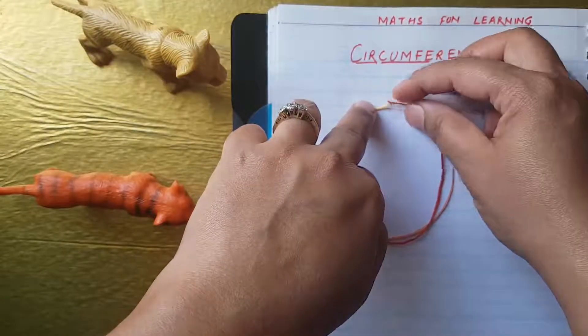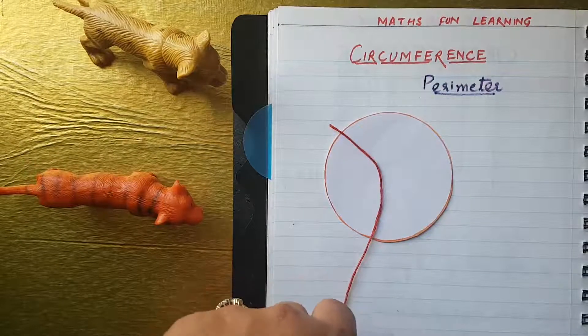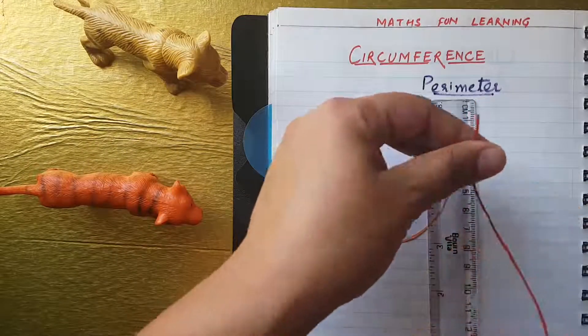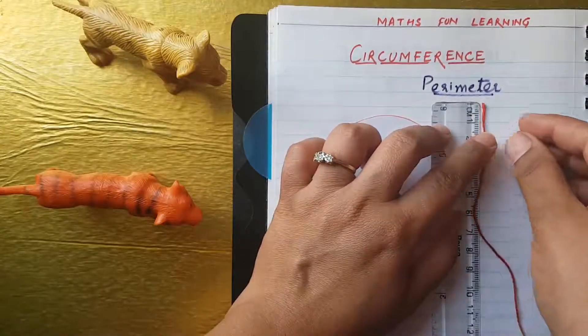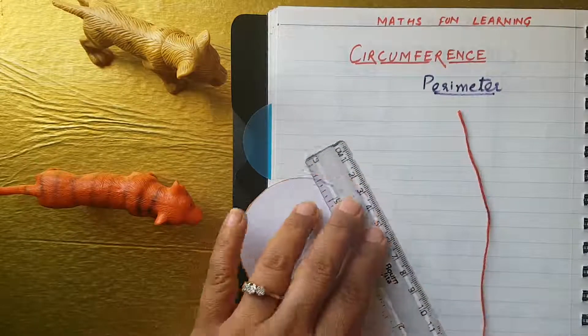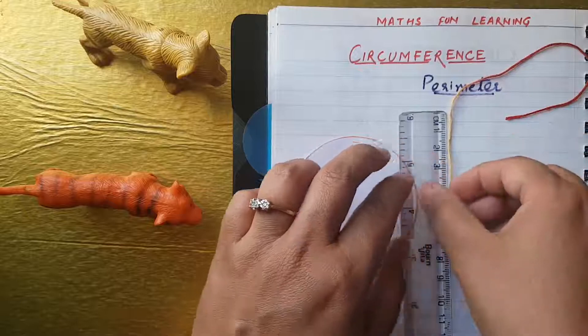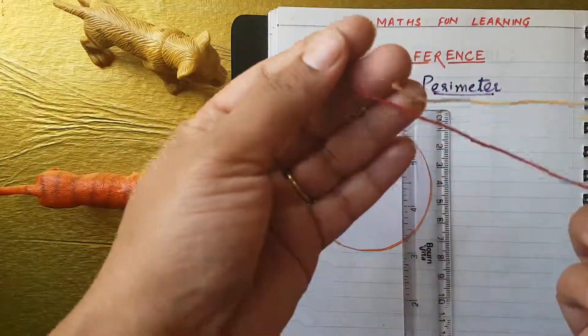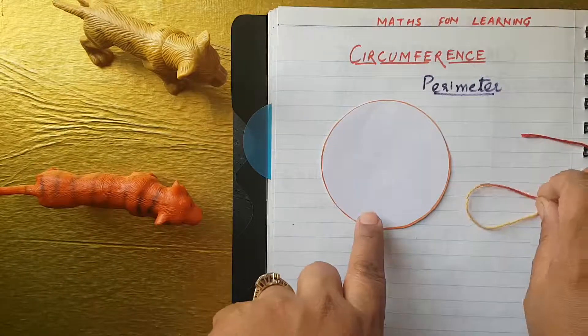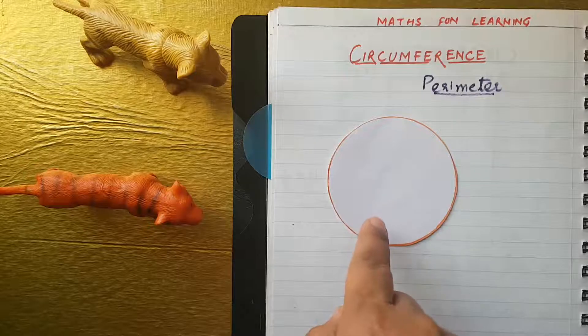Look, the thread reached here. And you can see, so that means this thread is perfectly outer boundary of the circle. Now, we will measure this thread with the help of the scale. Let me see how much, what is the length of this thread. Here, till here, it is 15 centimeter and 15 plus 7. So, total is 22 centimeter. This, the thread, the length of the thread is. So, that means the outer, that means the circumference of this circle is 22 centimeter.